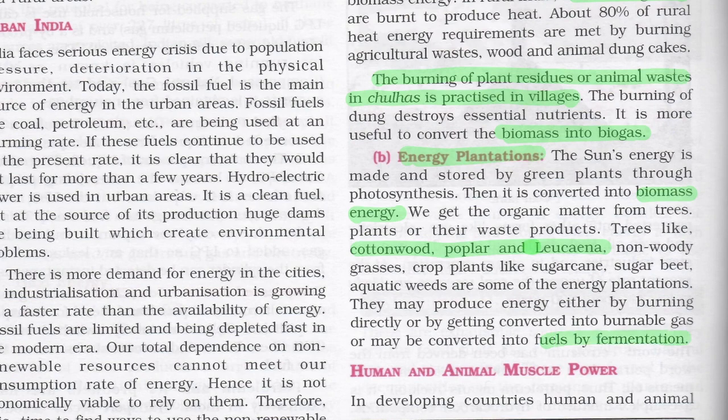Human and animal muscle power: In developing countries, human and animal muscle power is used for transportation, threshing, flocking, and lifting water for irrigation. Use of machines is less, and human muscle energy is used more. Human and animal labor is steady but does not produce pollution. However, in many places, men and animals are being exploited by working for long hours for meager financial returns. There is a need in India to develop a strong renewable energy base in villages.